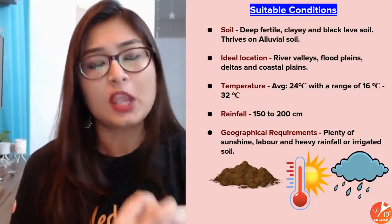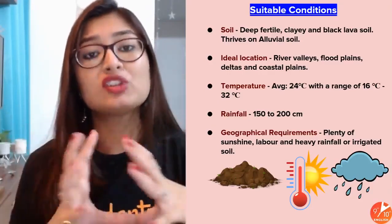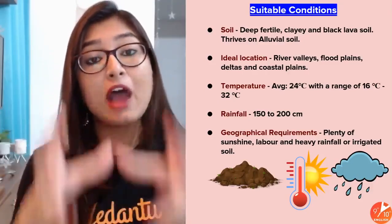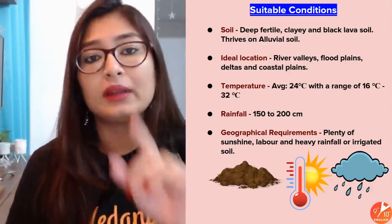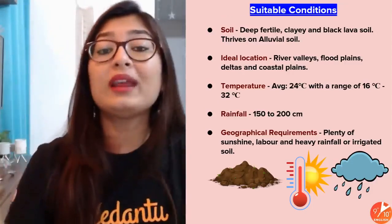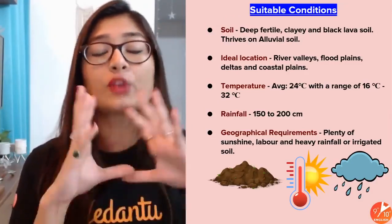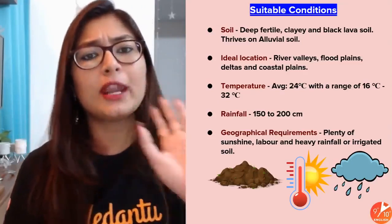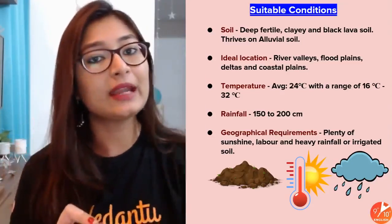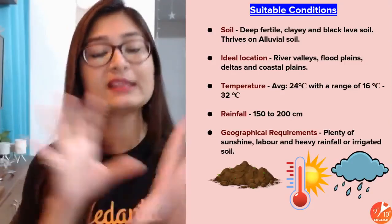Rice needs a lot of water to grow. If there is not enough natural monsoon or rainfall, irrigation must supply the requirement. I'll make it easy to remember step by step. First thing: rice requires a lot of water, which will come from rainfall or irrigation. The next question is where this rainfall occurs, which leads us to the climatic conditions.